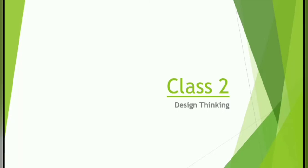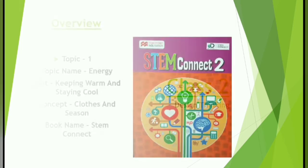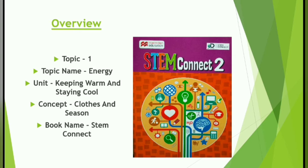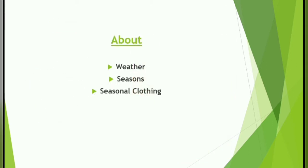Dear students, welcome to StudyBuzz, your online study channel. Today we will study the subject Design Thinking for Class 2. The topic number is one, topic name: Energy, unit name: Keeping Warm and Staying Cool, concept: Clothes and Season, book name: STEM Connect. We are going to discuss about weather, seasons, and seasonal clothing.